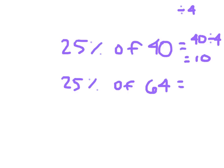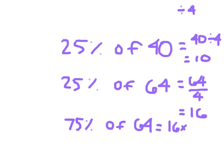25% of 64, we have 64 over 4. And that there is 16. This is what I was saying. 75% then of 64, we would look at 3 of those 16s, which would be 16 times 3, which equals 48.